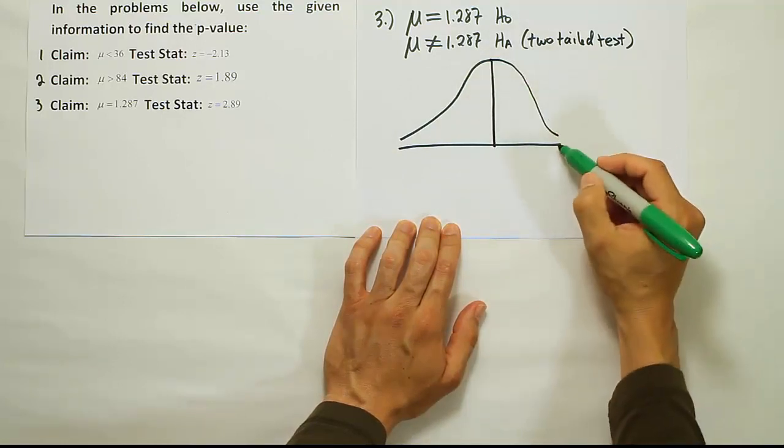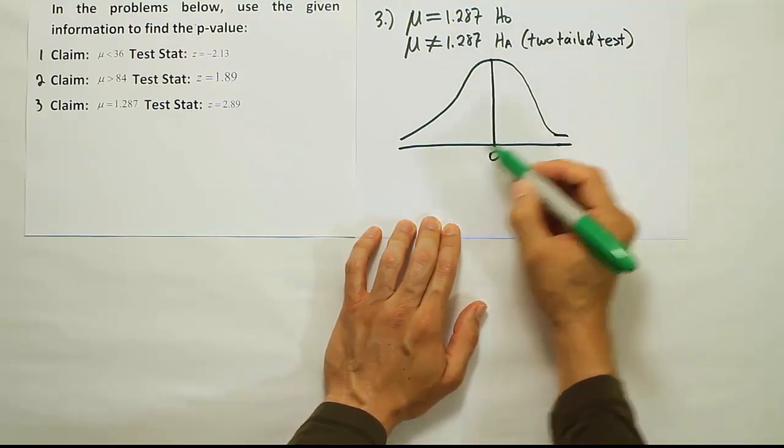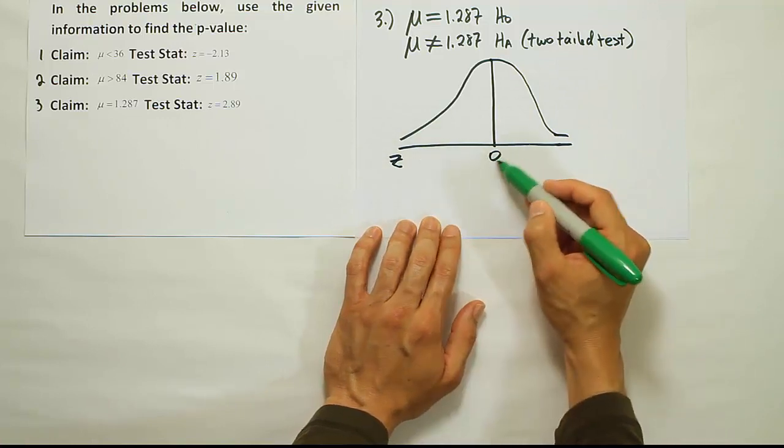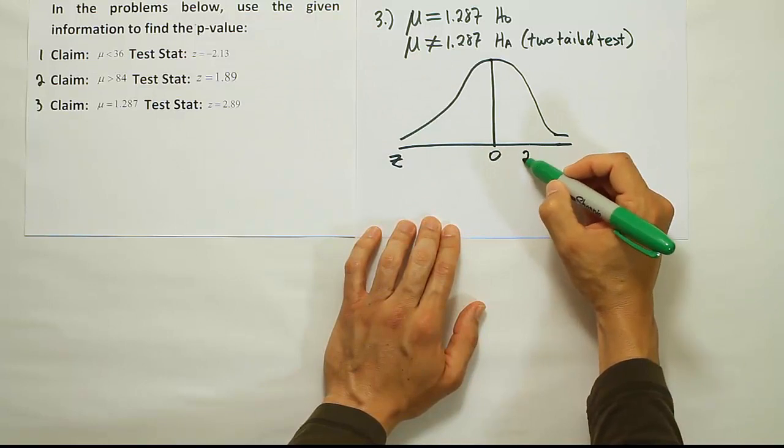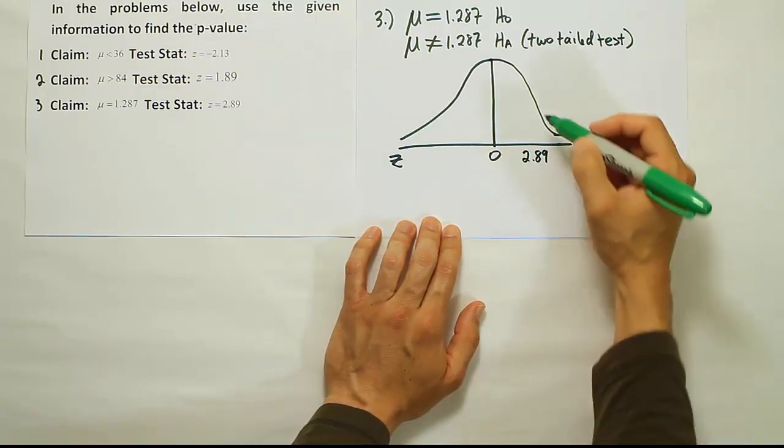All right, now remember, Z is centered at 0. We're going to put that test stat on the curve where it belongs. So it would be to the right, right? 2.89 is to the right of 0.